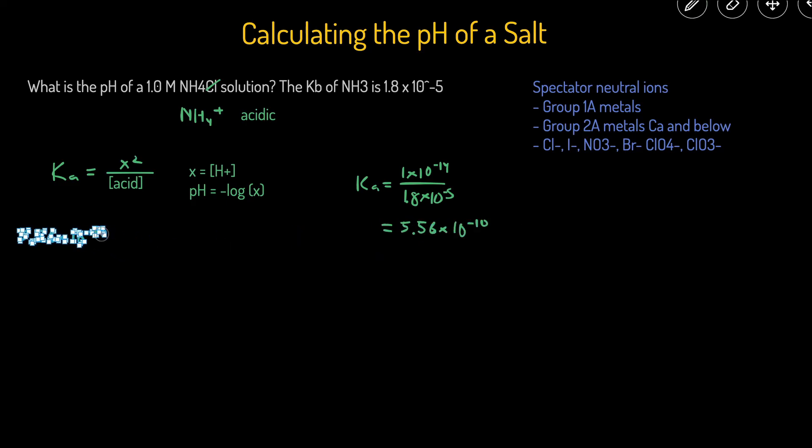So we'll put this right here. Ka is equal to x squared divided by the original concentration of the acid, 1.0. And this is 1.0 because this is going to break up into NH4 plus and Cl minus, and there's a 1, 1, and 1 ratio. So if we start with 1 molar, we'll get 1 molar of both of them.